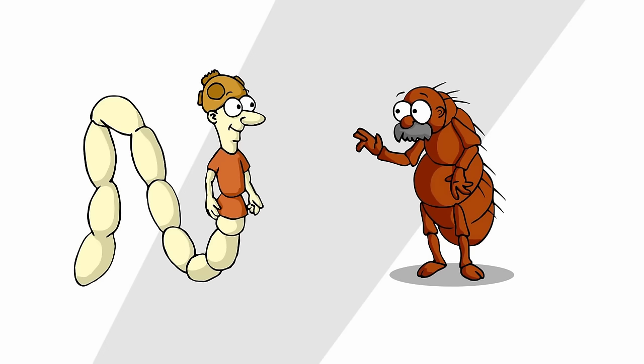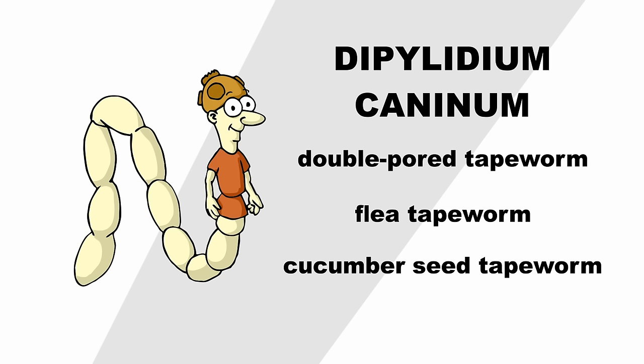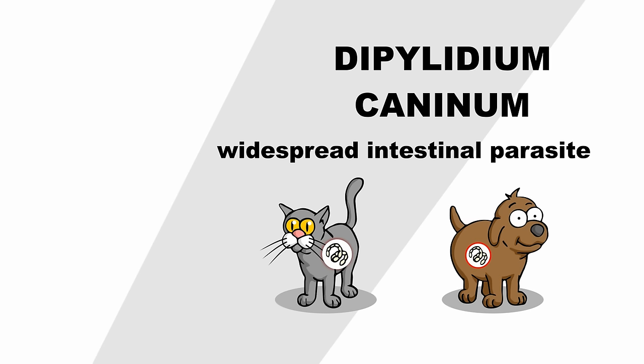Dipylidium caninum, aka the double-pore tapeworm or the flea tapeworm or the cucumber seed tapeworm... Seriously, is this a naming contest? It's a widespread intestinal parasite of dogs, cats and even people.